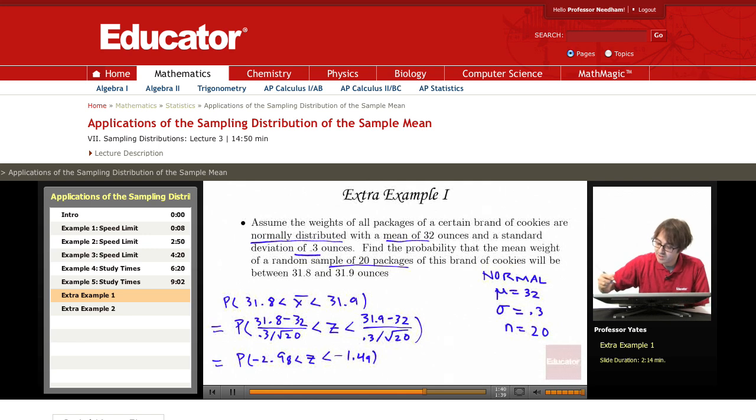If we were to sketch this out here, I have negative 1.49 and here I have negative 2.98, and I want the area in between those.